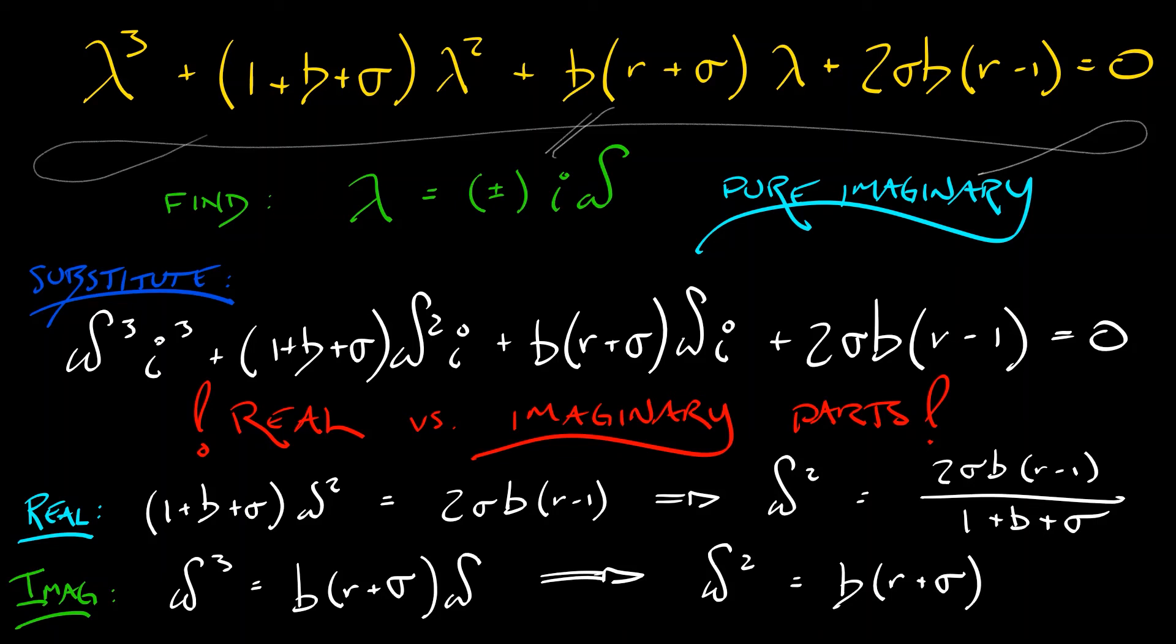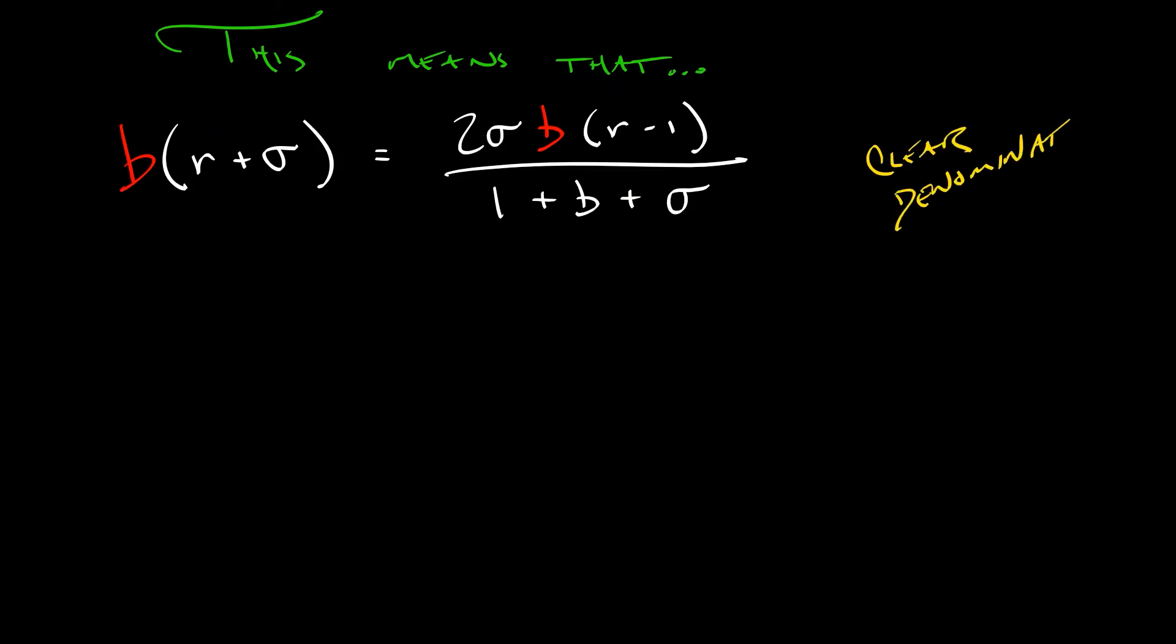We have those two equations for omega squared. We set them equal to each other, and what do we get? We've got that b times quantity r plus sigma equals two sigma b times quantity r minus one, all divided by one plus b plus sigma. There's clearly a b from both sides. We can cancel that out. And let's clear out that denominator multiplying on both sides. What we get is r times quantity one plus b plus sigma plus sigma times quantity one plus b plus sigma equals two sigma times quantity r minus one.